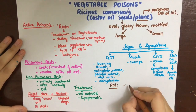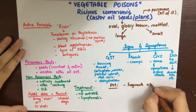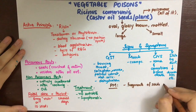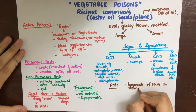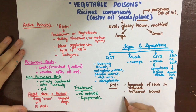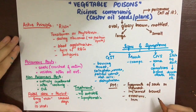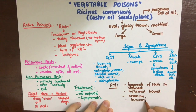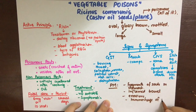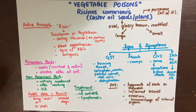Post-mortem appearances include fragments of seeds present in the stomach when dissected. The bowel will be inflamed, with occasional erosion of the submucosa and hemorrhage. Internal organs will also show hemorrhaging.